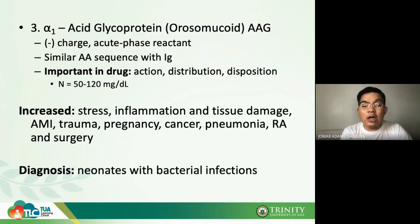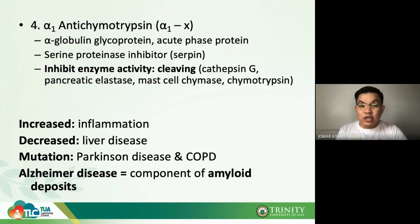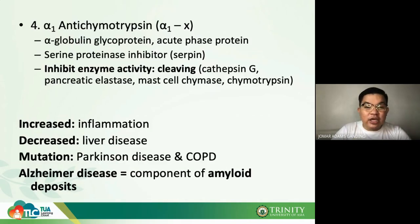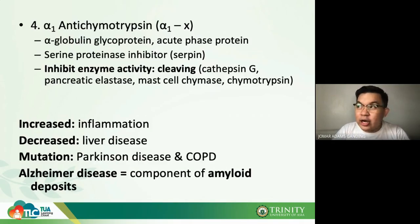Alpha-1 antichymotrypsin is an alpha globulin glycoprotein and a positive acute phase reactant. It is a serine protease inhibitor, or serpin inhibitor. It inhibits cathepsin G, pancreatic elastase, muscle chymase, and chymotrypsin — maintaining controlled enzyme activity.